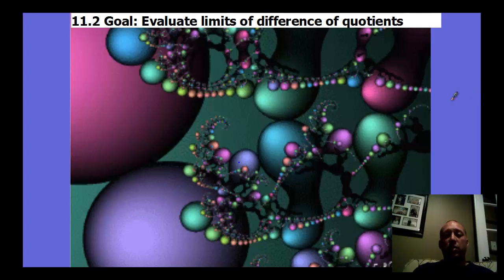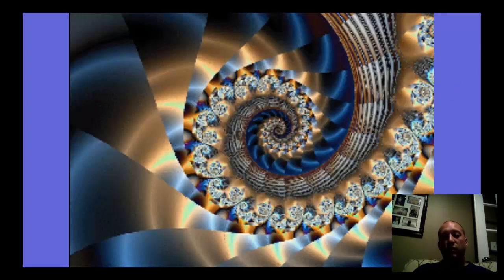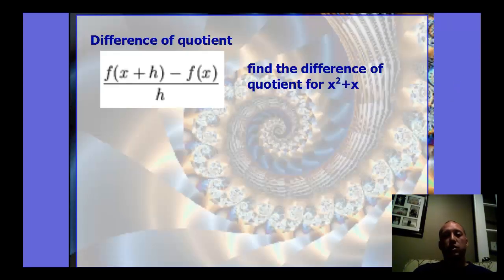Precalc Chapter 11, Section 2, Part B. We're going to look at finding limits of the difference quotient. We first need to review what the difference quotient is from Chapter 1.